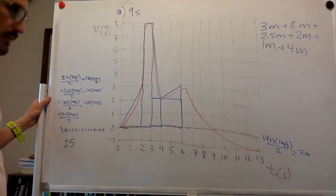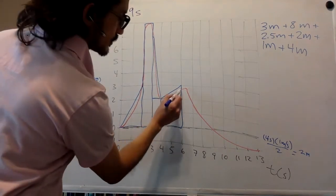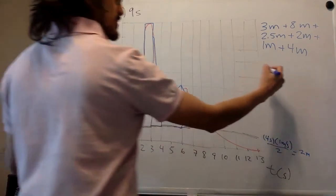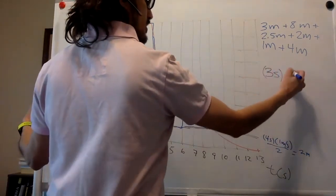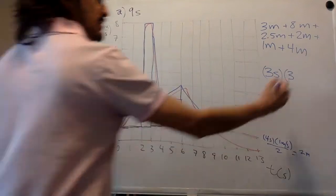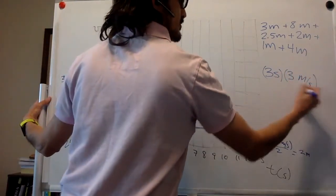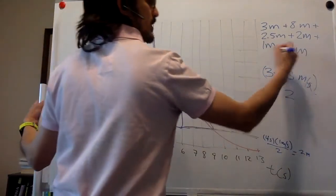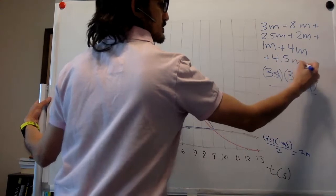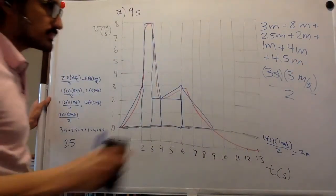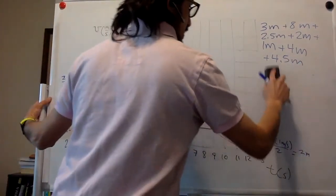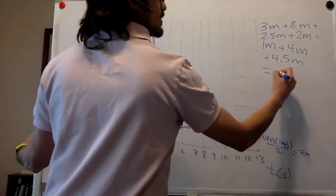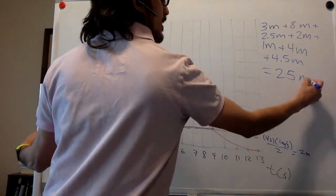And then I use this triangle. So this one is three seconds times three meters per second divided by two because it's a triangle. And so if you add everything, you end up with 25 meters.